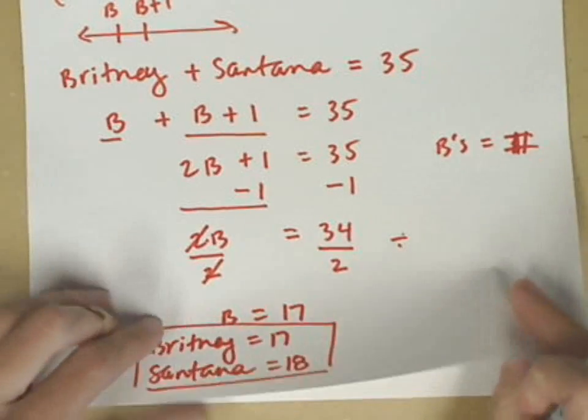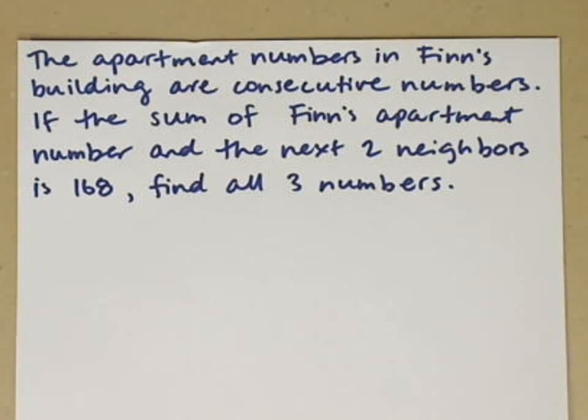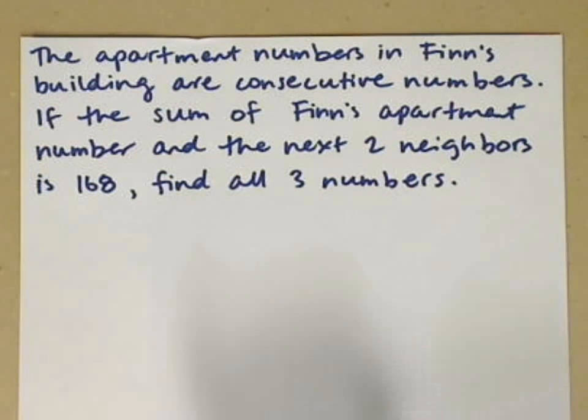Let's look at a second example. Here's our second example. The apartment numbers in Finn's building are consecutive numbers. So again, they're just one value apart. If the sum of Finn's apartment number and the next two neighbors, that would be Finn and then a neighbor and then a neighbor, is 168, find all three numbers.